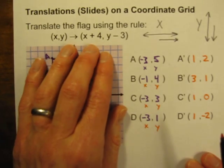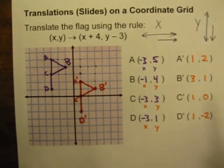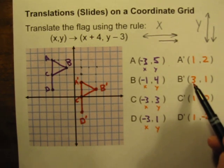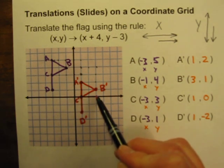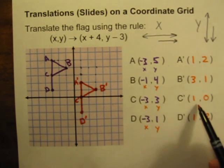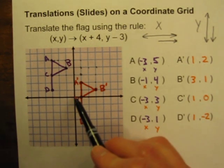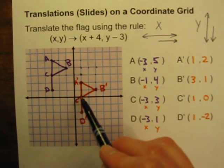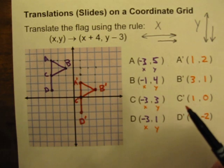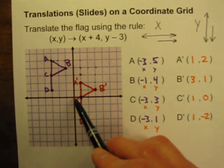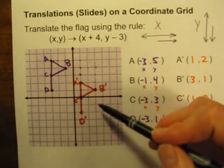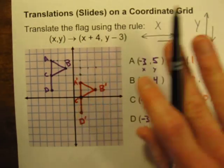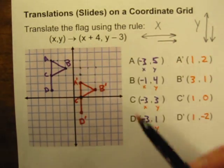The graph is handy at times, so let's use it to see if our coordinates are correct. We already checked A. Point B: x is 3, y is 1 — over 3 to the right, up 1, and there's B prime. Correct. C prime: x is 1, y is 0 — right 1, no up or down movement — also correct. D prime: x is 1, y is negative 2 — 1 to the right, 2 down — correct. So these are the coordinates of the translation using the rule. We can also perform the translation just by using the graph, going 4 to the right and 3 down.